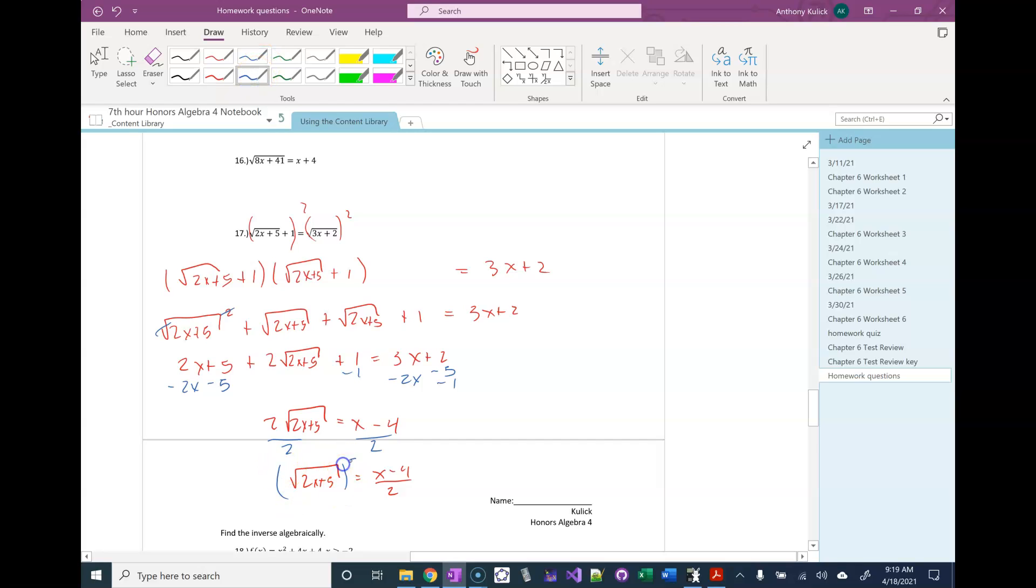Because the next step is I'm going to square both sides. So the square cancels the square root. I FOIL out the x minus 4 squared. And then I square the 2 on the bottom.